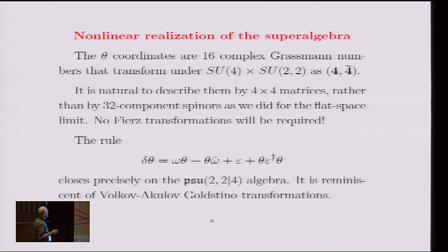So what I'm going to do is to describe the fermionic coordinates theta, the Grassmann coordinates, by a 4 by 4 matrix, which is quite natural because we're going to want them to be bifundamental under the bosonic groups, SU(4) and SU(2,2). And so we use these matrices. Of course, in the flat space limit, in the work I did with Michael a long time ago, we used 32 component Majorana-Weyl spinors to describe them. But in this problem, it's more convenient to use these 4 by 4 matrices.